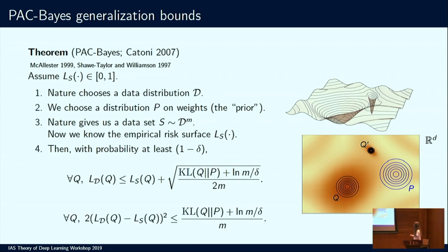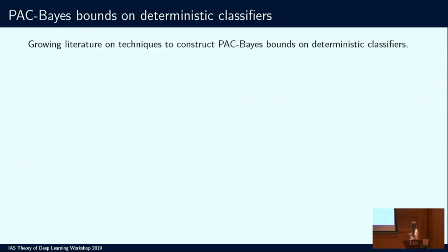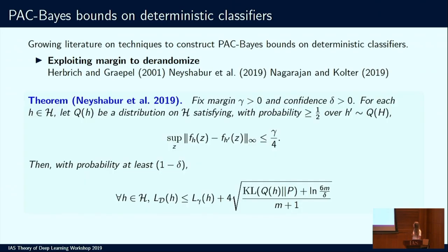PAC-Bayes bounds can be rewritten as bounding the squared difference between the risk and empirical risk of Q in terms of the KL divergence. In fact, PAC-Bayes bounds can be proven for any convex function of empirical risk and risk of Q, bounded above in terms of KL divergence between Q and P. My original goal was to get guarantees about generalization of SGD. PAC-Bayes bounds yield bounds for Gibbs classifiers — randomized classifiers — and there is a growing literature on techniques to construct PAC-Bayes bounds on deterministic classifiers. One such approach exploits margin to de-randomize, initially applied in the setting of SVMs.